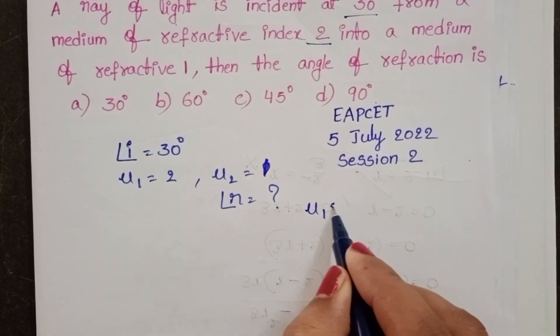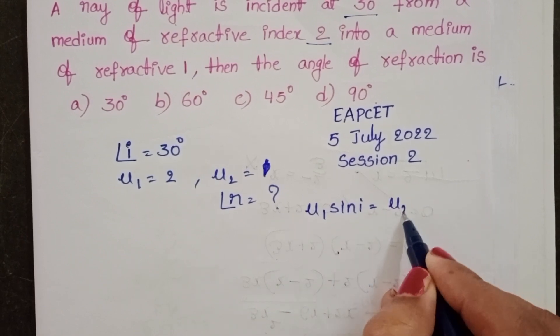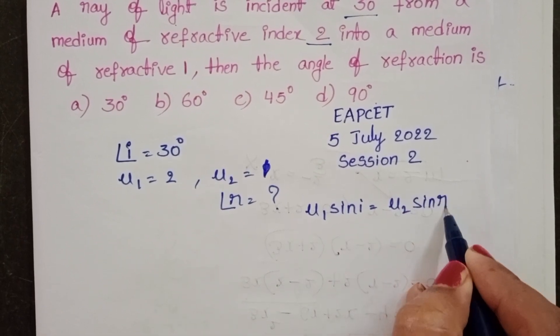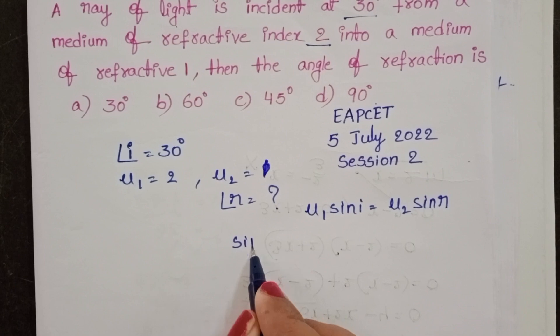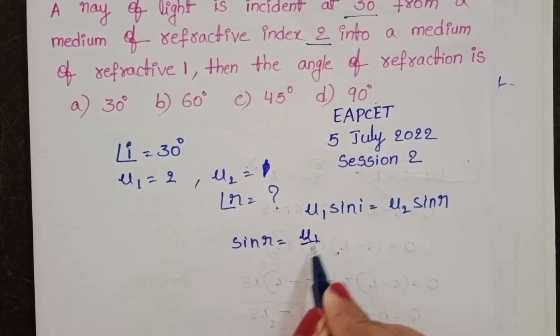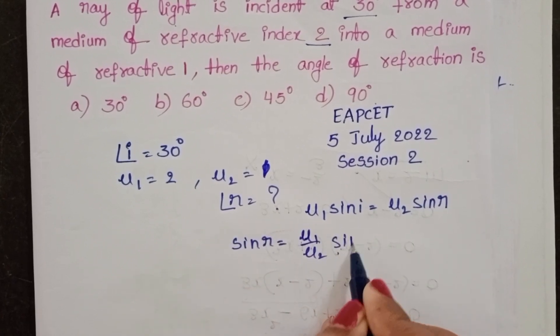Take Snell's law: mu1 sin i equals mu2 sin r. From this formula, sin r equals mu1 by mu2 into sin i.